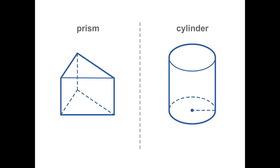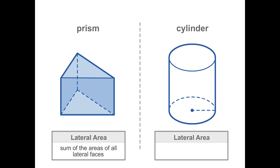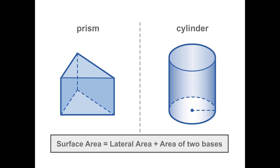So the lateral area of a prism is the sum of the areas of all the lateral faces. For a cylinder, it is the area of the lateral surface. The total surface area of a right prism or cylinder is the lateral area plus the area of the two bases.